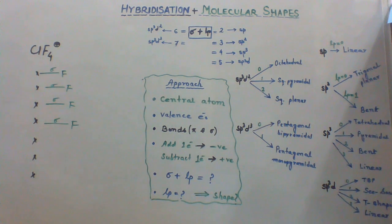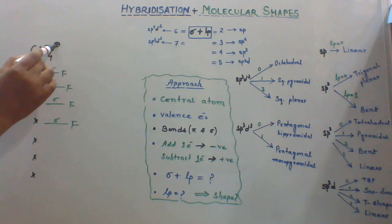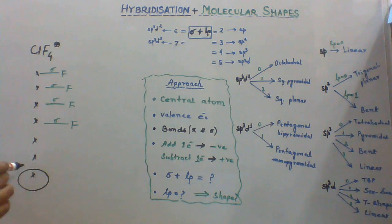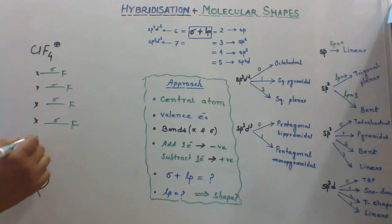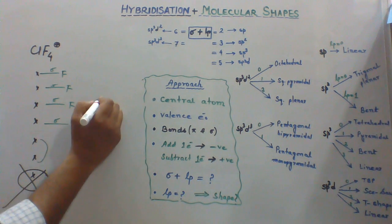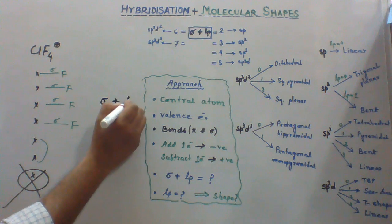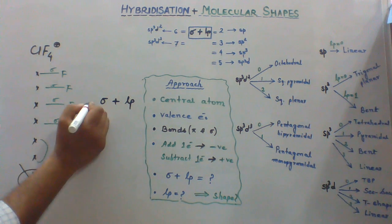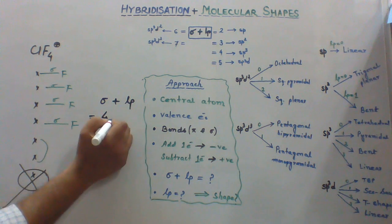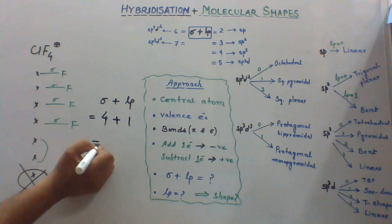And if you observe carefully, there is one positive charge. Because of one positive charge, this electron will be removed. Now we have 1 lone pair. Let's calculate how many sigma bonds we have, how many lone pairs we have. We have 4 sigma and we have 1 lone pair. That is 5.